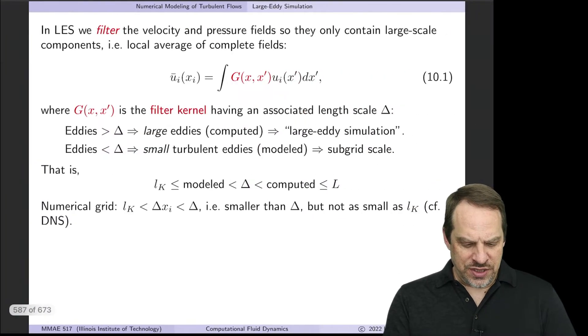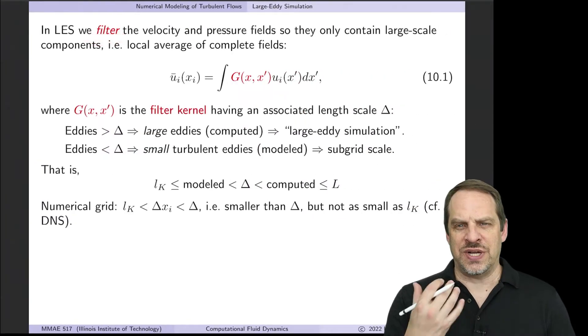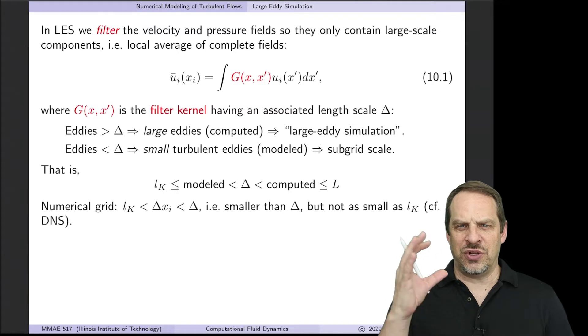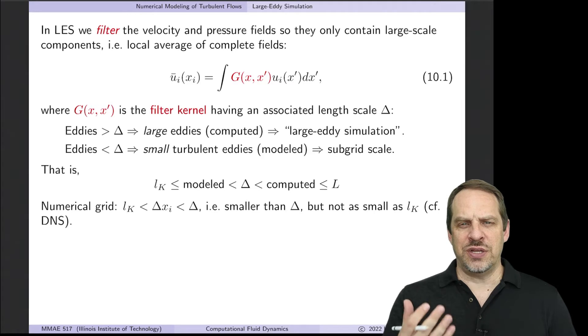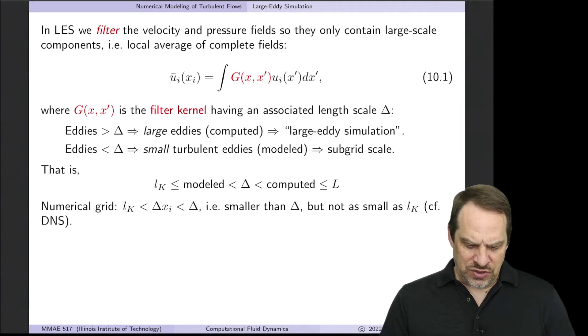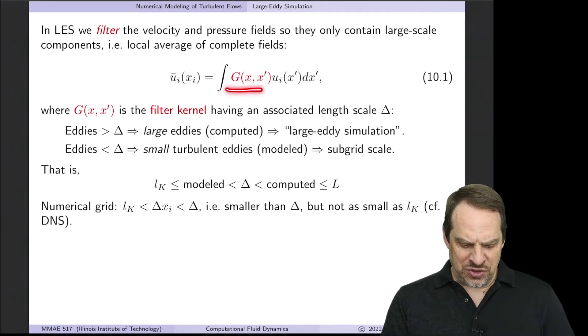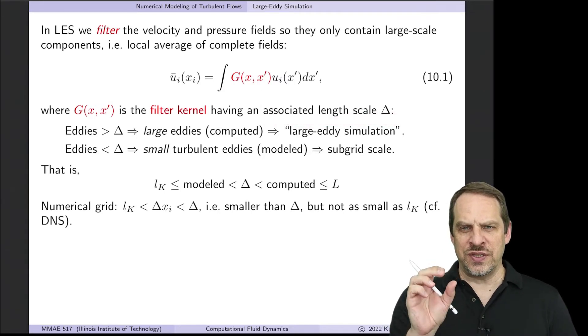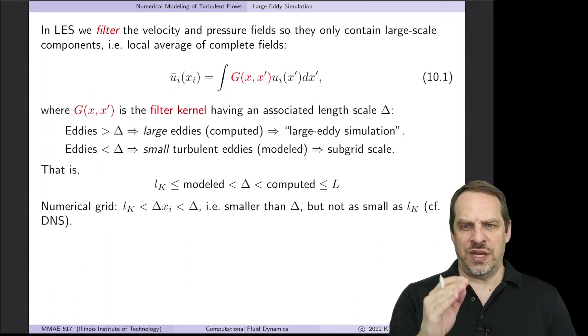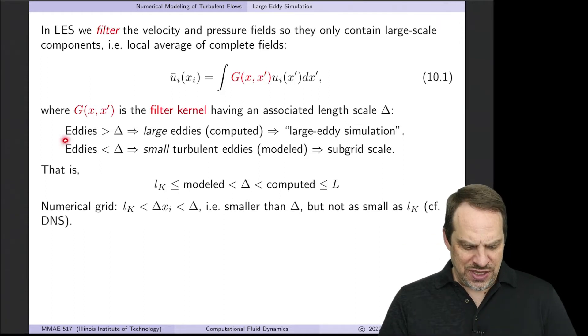LES involves filtering the velocity and pressure fields to separate the large scales and small scales, the large eddies and small eddies inherent in turbulent flow. We locally average the complete fields using a filter kernel G that has an associated length scale Δ. That filter size determines the threshold between large eddies and small eddies.